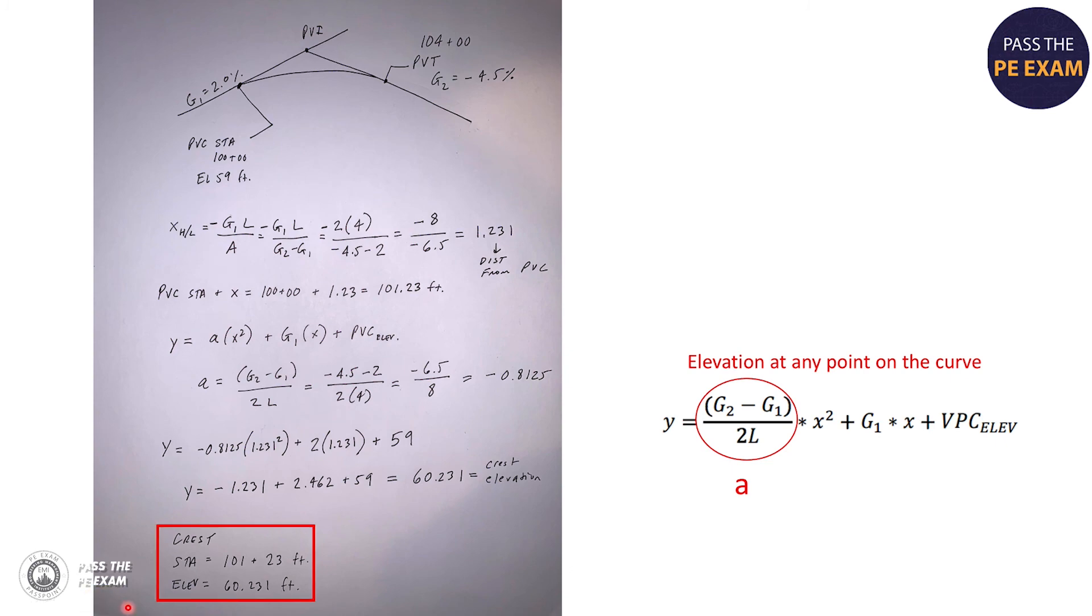And so there you have it. We've solved the crest or high point location, which is station 101 plus 23 feet. And we've solved the elevation, 60.231 feet. And I'm just going to say it again, and I know I sound like a broken record, but when they give you a lot of information, it can often be a trap. Many people in this problem would have taken L over 2, which was 2, and added it to the PVC station of 100 and circled or answered with 102 plus 00. And that's wrong.